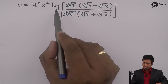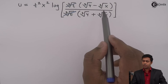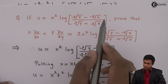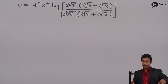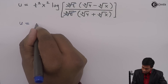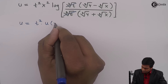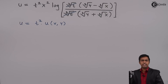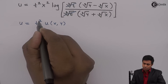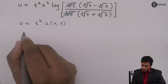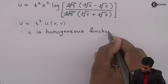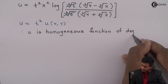After cancellation, inside the log we get (cube root of y minus cube root of x) over (cube root of y plus cube root of x), which is exactly the original function u. So we are getting the original function back, meaning u equals t squared times u(x, y). Therefore u is a homogeneous function of degree 2.